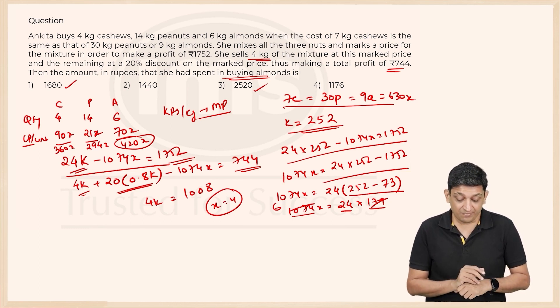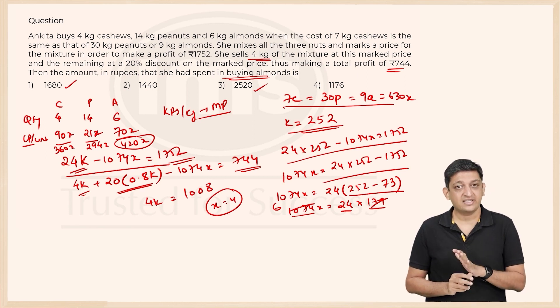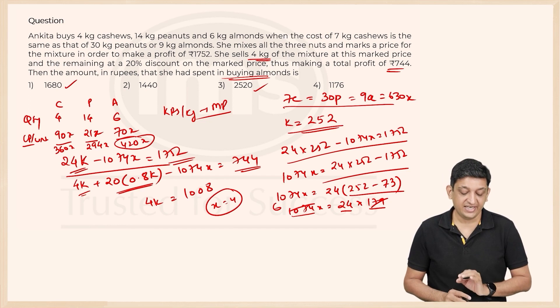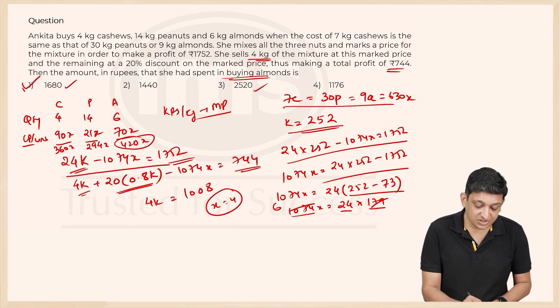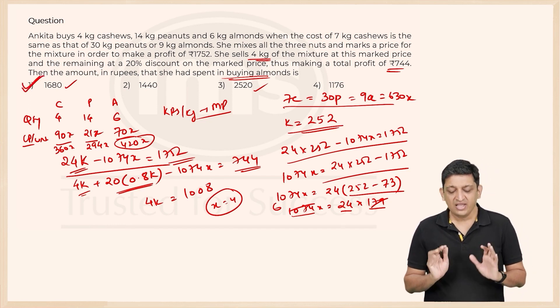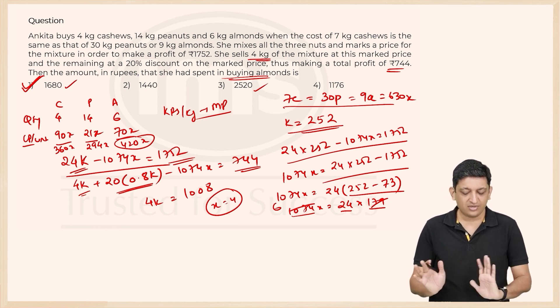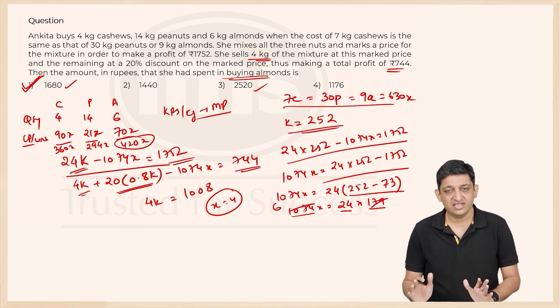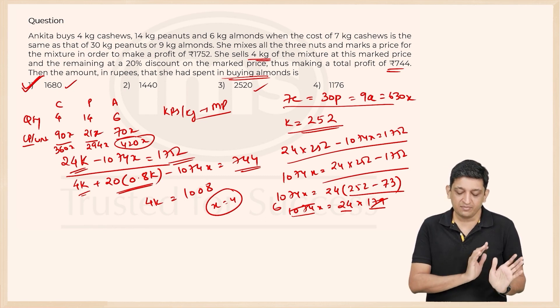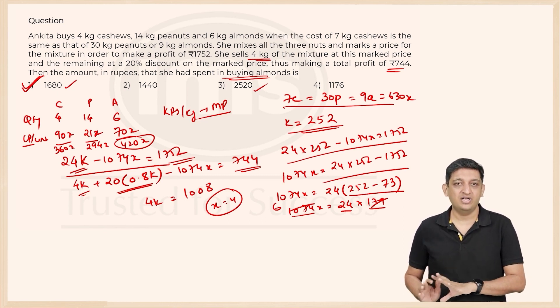What is the amount that she had spent in buying almonds? 420X. 420 into 4 will be nothing but 1680 rupees. So the correct answer here is option 1 that is 1680. Yes, it was a difficult question. There is a lot of calculation involved, lot of numbers that are there. But if you are comfortable with numbers, you will be able to answer this question properly without hesitating even a moment.